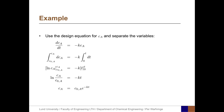For the sequential strategy, we first solve for C_A. Starting with the design equation, we separate variables and include the boundaries, evaluate the primitive functions, and insert the boundaries on both sides. The final expression is C_A equals the initial concentration of A times e to the minus K times t. With numerical values, C_A equals 2 times e to the power of negative 0.5 times 4, which gives 0.271.